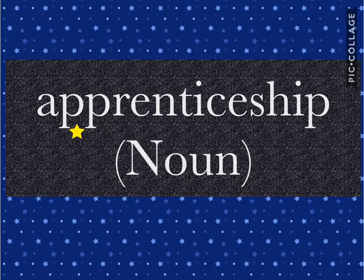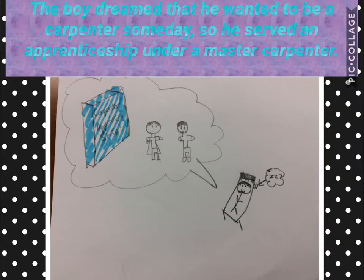Another form of apprentice is apprenticeship, which is also a noun. For example, the boy dreamed that he wanted to be a carpenter someday, so he served an apprenticeship under a master carpenter.